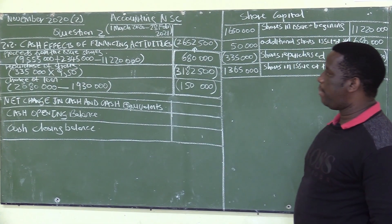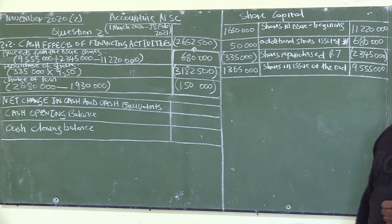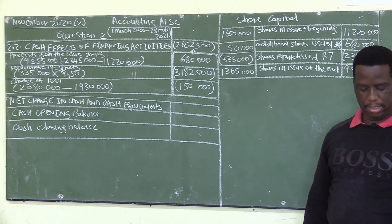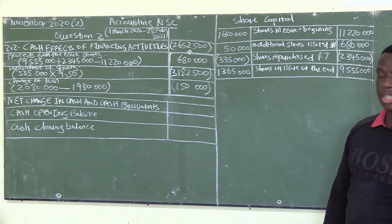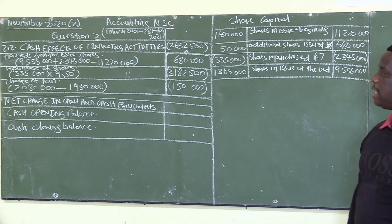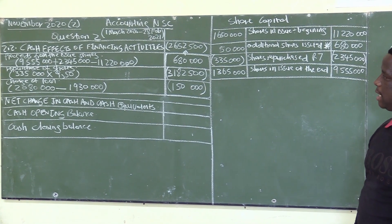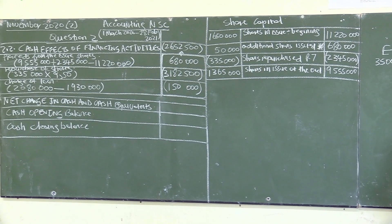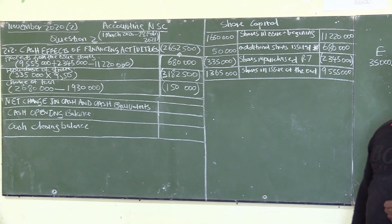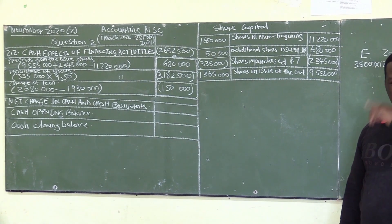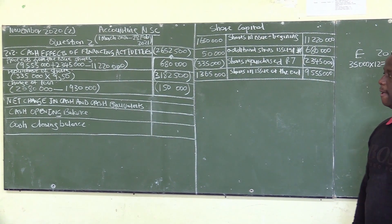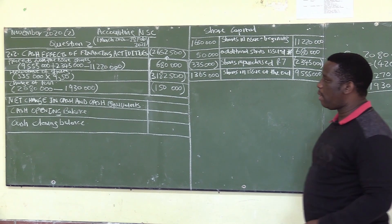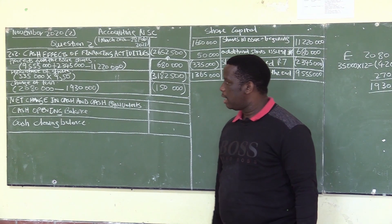It is important to remember that the company is mainly financed by shares. When we are issuing shares, that is where we get most of our funds. But if the money obtained from the issuing of shares is not enough, we then look for another option wherein we need to take a loan.